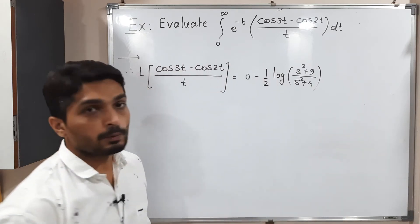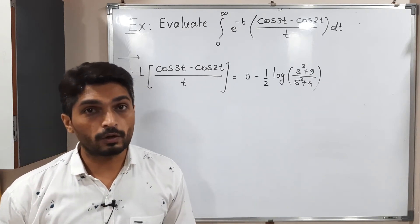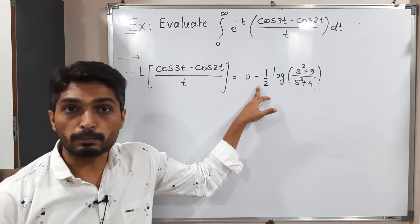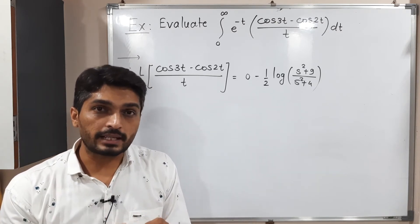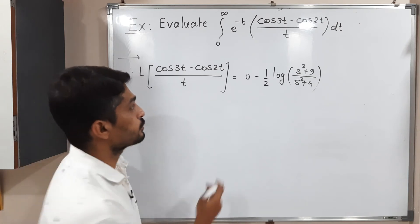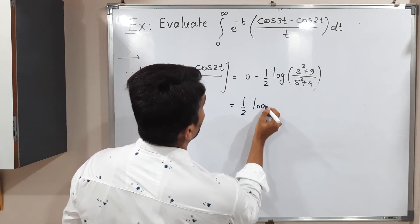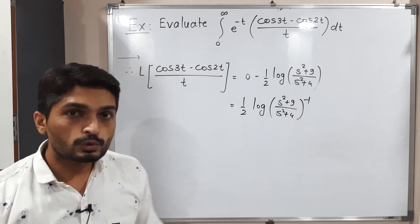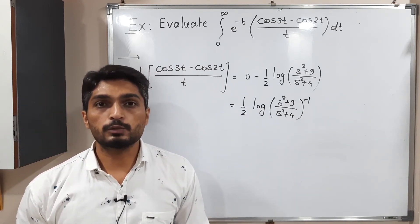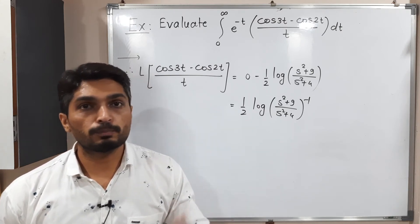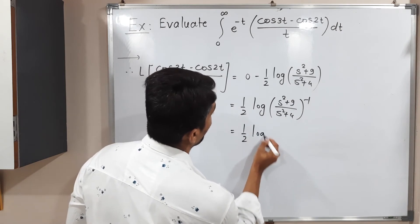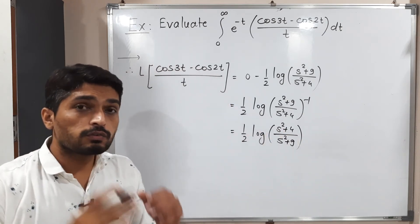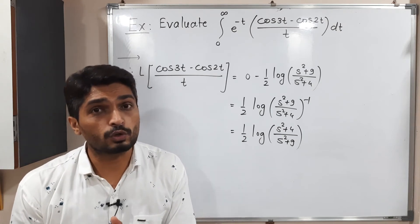Using the log property log(a^n) = n·log(a), the factor minus 1/2 can be taken as a power of minus 1 inside the bracket, giving (1/2) log[(s² + 9)/(s² + 4)]^(−1). To make the power positive we interchange numerator and denominator, giving (1/2) log[(s² + 4)/(s² + 9)]. This is the Laplace transform of (cos 3t minus cos 2t) divided by t.